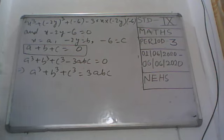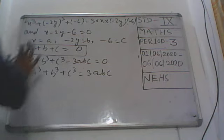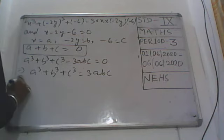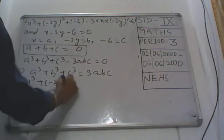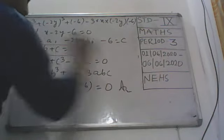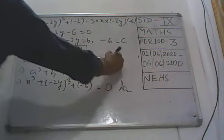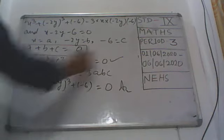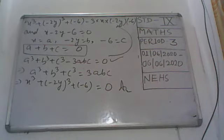So that means x cube plus minus 2y whole cube plus minus 6 whole cube is equal to 0, because a plus b plus c is equal to 0 and the expression fits the shape of the formula. Both are the same, so for that reason this becomes simply 0.